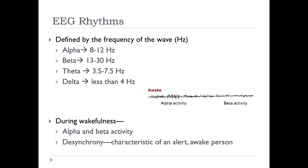When you're awake, you generally experience alpha and beta activity — usually beta if you're alert and doing something, and alpha when you're relaxed. Desynchrony is experienced when you're alert and thinking, because the neurons are all firing independently. There's a myth that we only use 10% of our brain — that's an awful myth. We use all of our brain most of the time, even when we sleep, especially when we sleep. Our brain isn't resting.